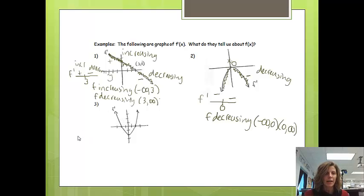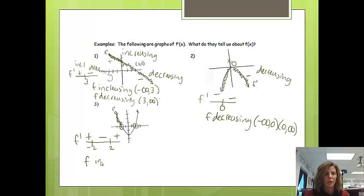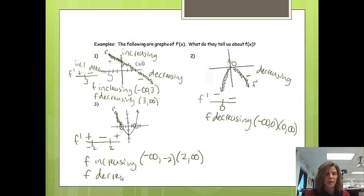For the third example, I'll use an f prime chart right away. The derivative equals 0 at x equals negative 2 and x equals 2. Before negative 2, all y-values are positive. Between negative 2 and 2, the y-values are negative. After 2, the y-values are positive again. So f is increasing from negative infinity to negative 2, and also from 2 to infinity. F is decreasing between negative 2 and 2.